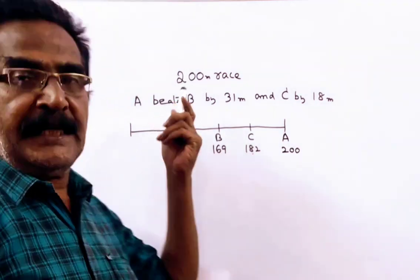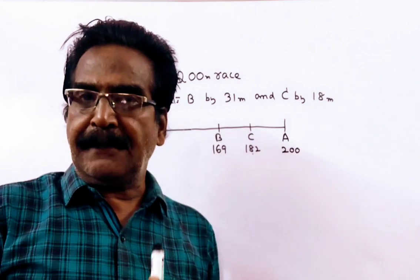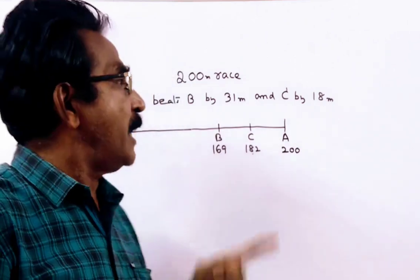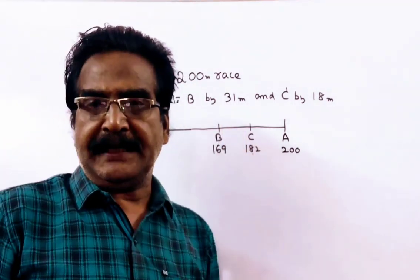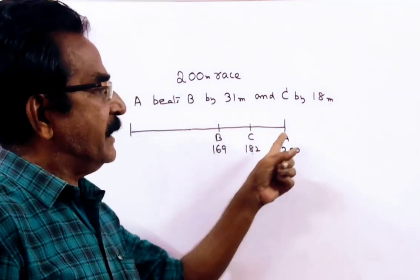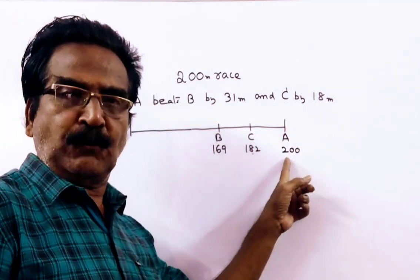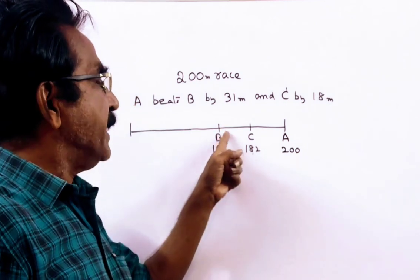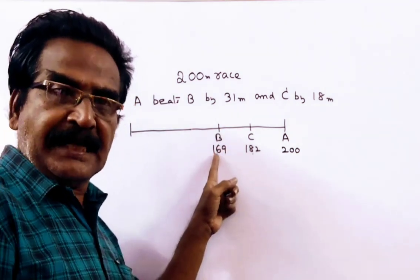See friends, in a 200 meters race, A beats B by 31 meters and C by 18 meters. That means, by the time A completes the race of 200 meters, B runs only 169 meters.